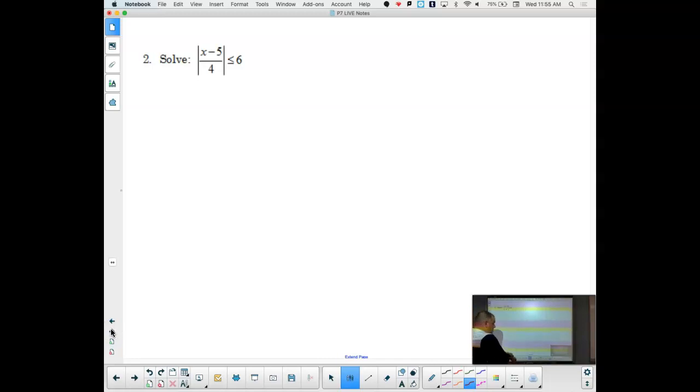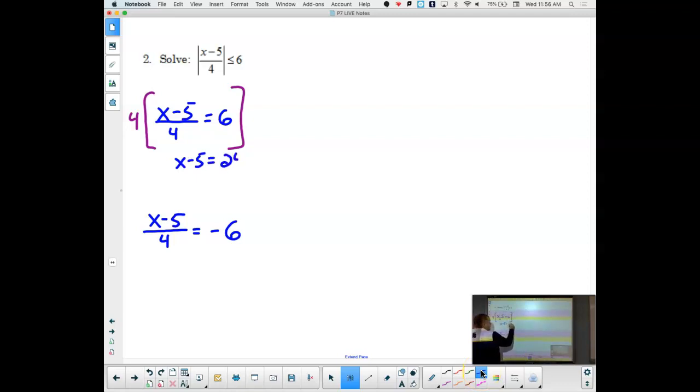Another one. Again, treat it as if it were an equal sign. So we have x minus 5 all divided by 4 equals 6. And then we'd have x minus 5 all divided by 4 equals negative 6. So here I would multiply this entire equation by 4 and that would give me x minus 5 equals 24. Add 5 to both sides, I get x equals 29. Then go to the second one. Multiply everything by 4. This time now I get x minus 5 equals negative 24. Adding 5 gives me x equals negative 19.